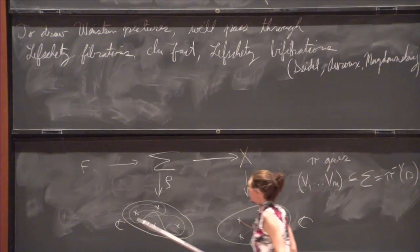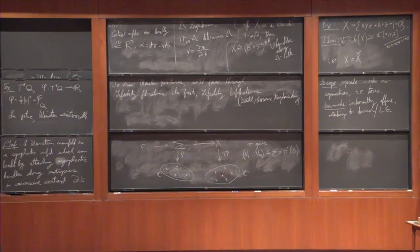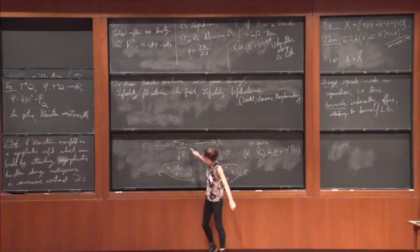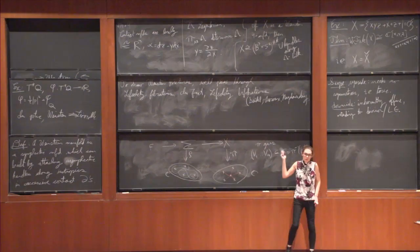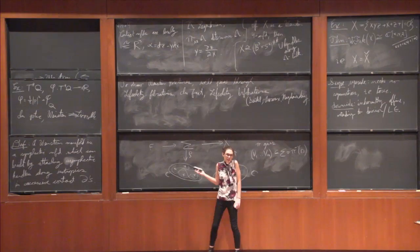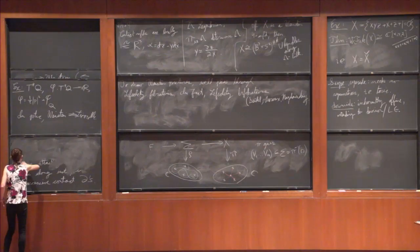And now one would hope, and this is something that can kind of be done in many examples, is that each of these vanishing cycles in the sigma is given as a matching path in this Lefschetz fibration. So what that means is that these are arcs connecting two critical points together. So that's giving me kind of two thimbles, and then I'm gluing them together along their boundary to get a Lagrangian sphere, and that sphere should give my v_k.